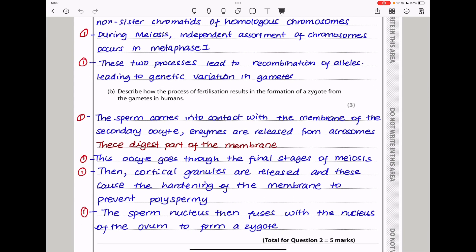The next part says describe how the process of fertilization results in the formation of a zygote from the gametes in humans. During fertilization, the sperm will come into contact with the secondary oocyte, and then there will be release of these enzymes from the acrosome that are going to digest the membrane surrounding the oocyte. The sperm comes into contact with the membrane of the secondary oocyte. Enzymes will be released from the acrosome, which is contained within the sperm. These are digestive enzymes that will digest a part of the membrane, and the oocyte will go through the final stage of meiosis. Also, the cortical granules are going to be released, and these will cause the hardening of the membrane, or the zona pellucida, to prevent polyspermy. The sperm nucleus will fuse with the nucleus of the ovum in order to form a zygote. This brings us to the end of question 2.